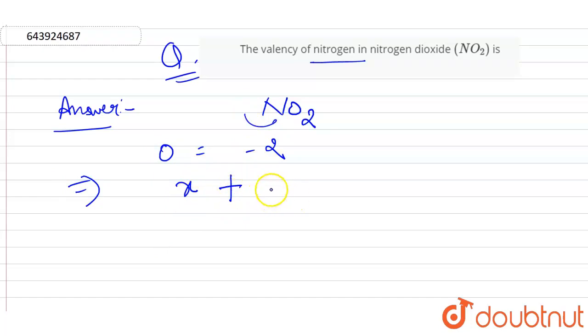x plus 2 multiply minus 2. 2 is for the molecule of oxygen in NO2. It equals to 0, this is the equation.